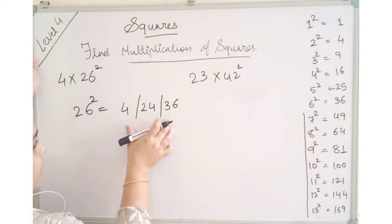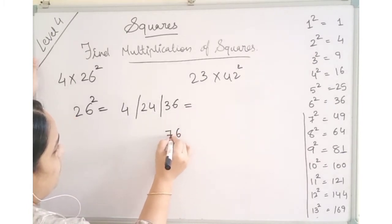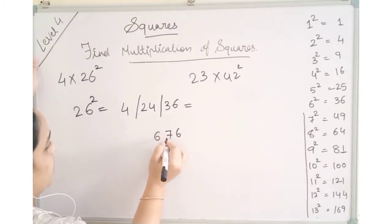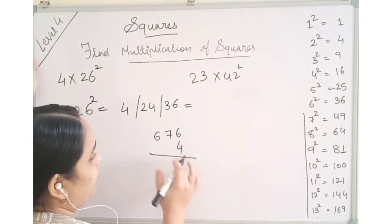26 square is 676. If you want you can do directly the simple method. 36, so 6 as it is 3 went here. So 7, 2 went here. So 6, 7, 6 multiplied by 4.